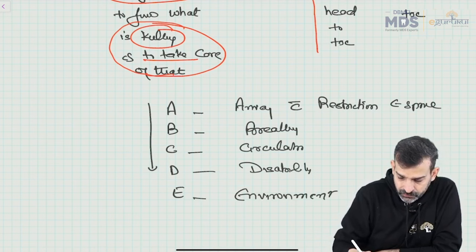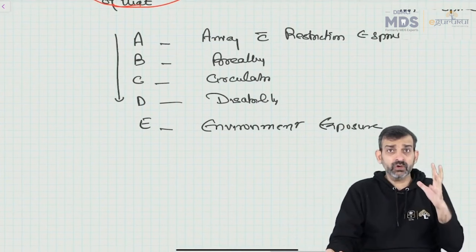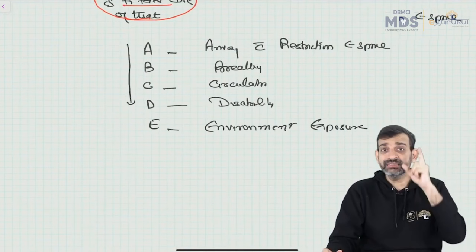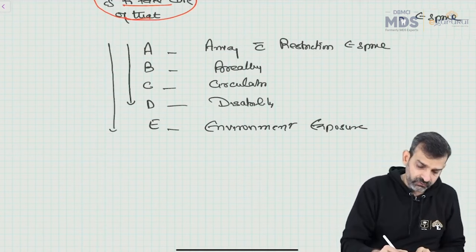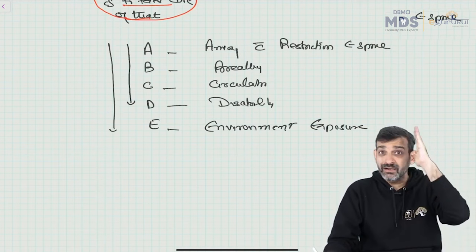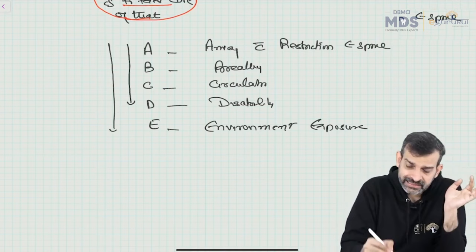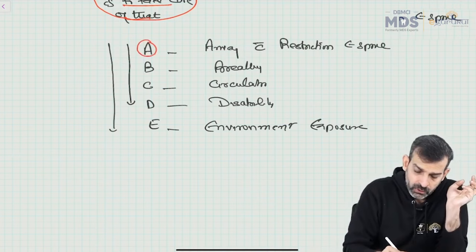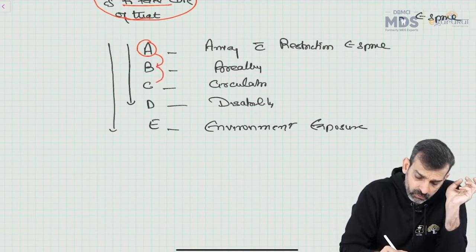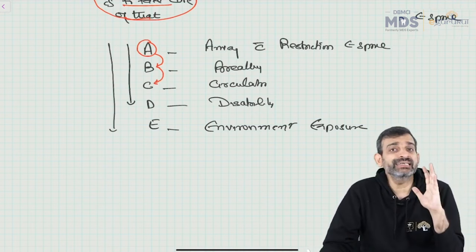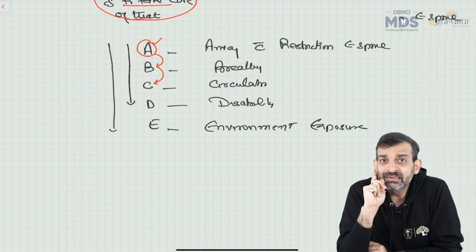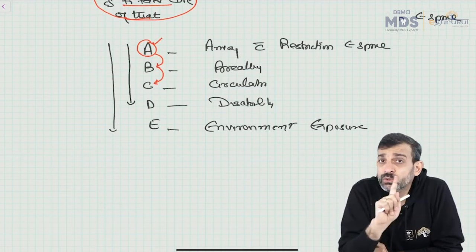We not only need to know what ABCDE stands for, we have to understand the concept. The ATLS guideline says: if A is not a problem, you should immediately go to C. But if A is a problem, even if there is an evident B and C problem in a given patient, you cannot go to B and C until you have completely taken care of A.